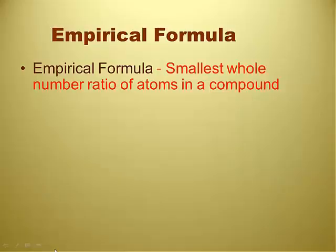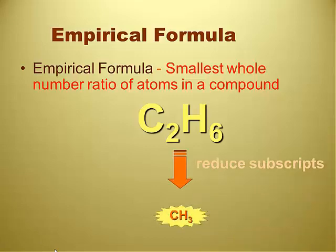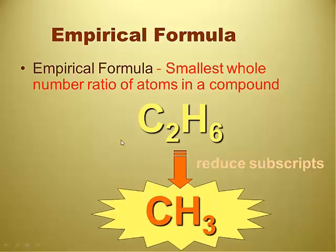Empirical formula, by definition. So today's about empirical formula. By definition, empirical formula is the smallest whole number ratio of atoms in a compound. I call this EF for short because I'm such a lazy person. So Mrs. G, is this an empirical formula? Nope. It is not the smallest whole number ratio of atoms. I can reduce that down. Yeah, the two and the six — they're both divisible by two. Correct. So we could actually reduce those subscripts to CH₃. That's an empirical formula. CH₃ right down there.